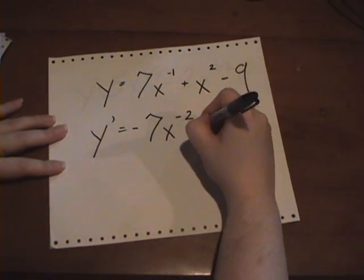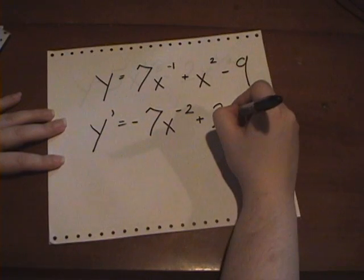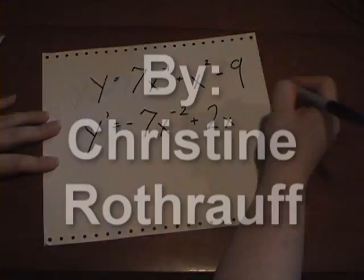And then for this one, you take the 2 out, and then you have 2 minus 1. I hope this video helped you with the sum and difference rule.